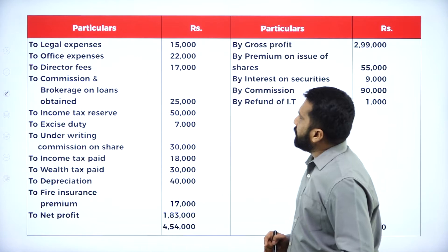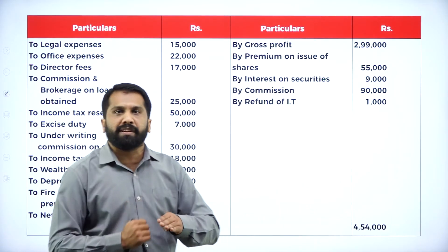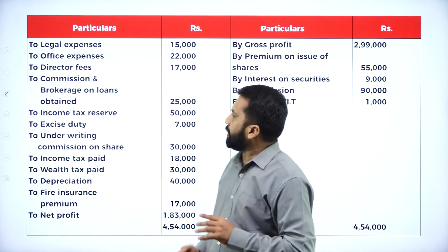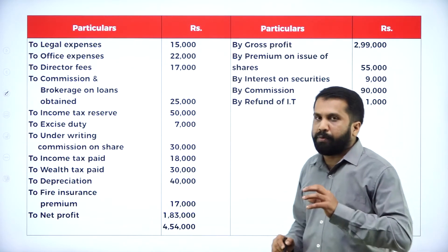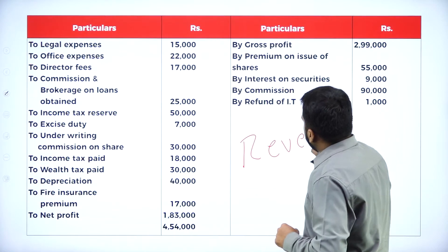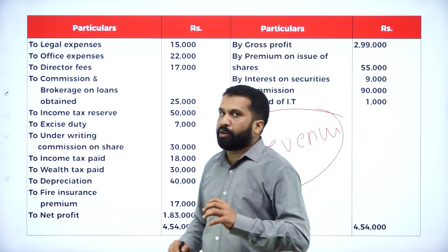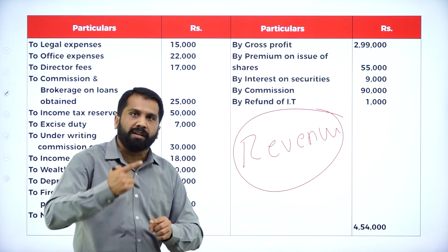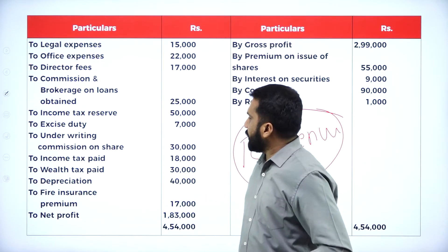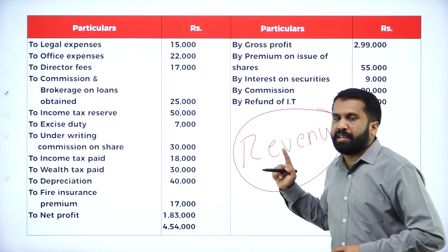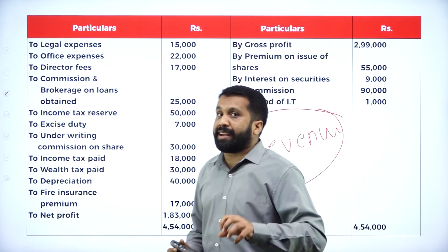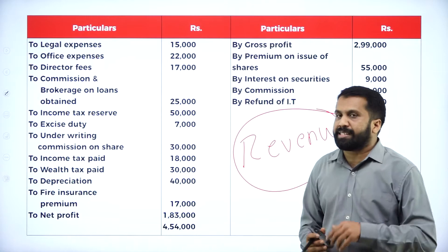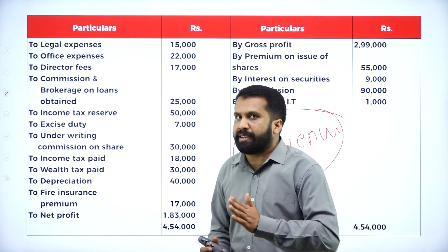In the question, they will always give you the profit and loss account. The debit side we call it as all the expenses and the credit side we call it as all the incomes. In the P&L account, whatever we get we call it as revenue expenditures and revenue income. Revenue is nothing but repeatedly happening, recurring in nature. What are the expenses which are recurring in nature? We call it as revenue expenditure and revenue income. It is also called indirect expenses and indirect income.